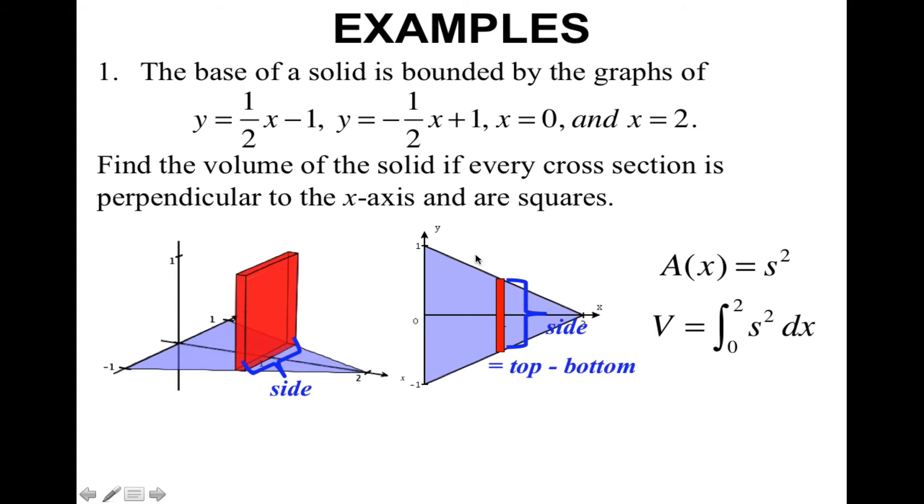I want to integrate that side squared. To figure out what one side length is, I am going to do top minus bottom. Since these functions are pretty nice, they're linears. Your top curve is your negative 1/2 x plus 1. Your bottom curve is 1/2 x minus 1. That gives me my side length. Top curve minus bottom curve. Since the area of the square is you have to square the side length, I'm going to square this. This is what I'm going to integrate.